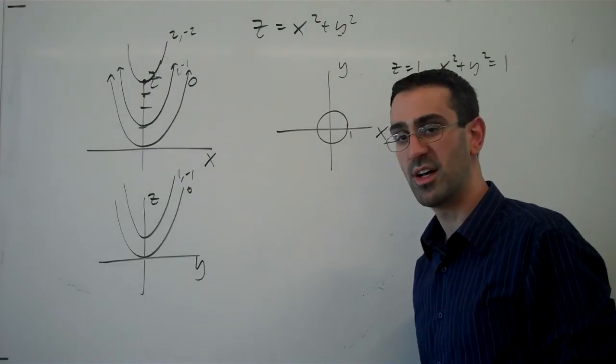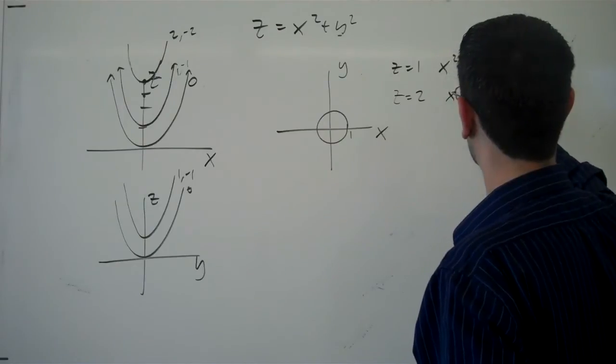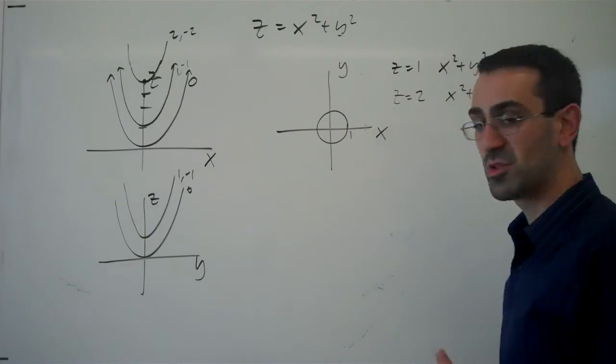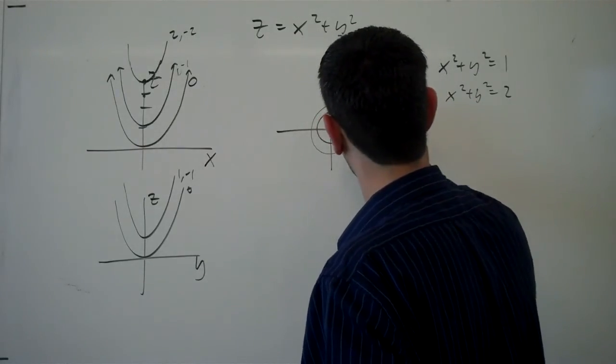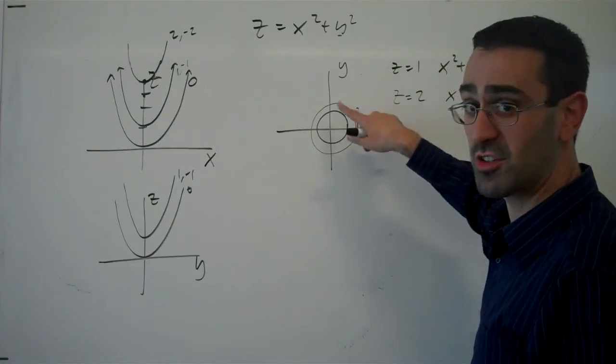So there's a circle of radius 1. If z equals 2, we'd have x squared plus y squared equals 2, which is a circle with radius root 2, or about 1.4, so there.